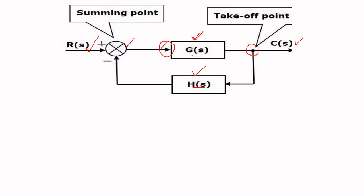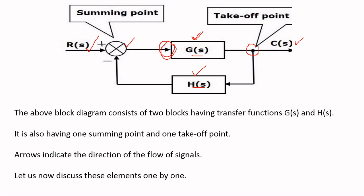The block diagram consists of two blocks having the transfer functions G(s) and H(s). It has one summing point and one takeoff point. The arrows indicate the direction of flow of signals. Now we are going to discuss each element in detail.